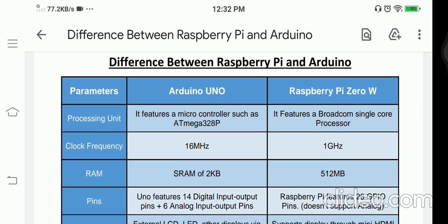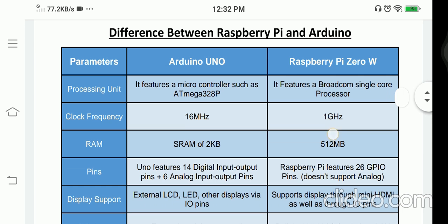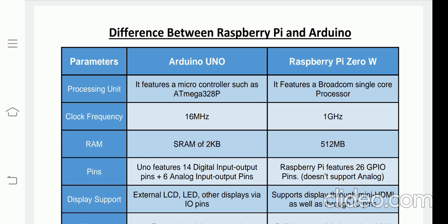The clock frequency for Arduino is 16 MHz, whereas it is 1 GHz for the Raspberry Pi. This is the basic version of Raspberry Pi, so in more recent versions the values may be greater. If we consider Raspberry Pi 3, these values may be greater than the basic version.